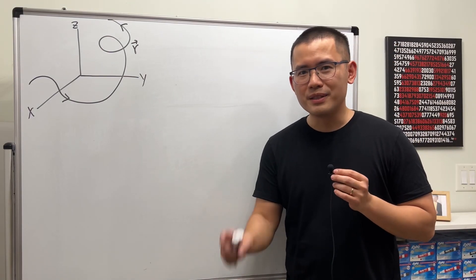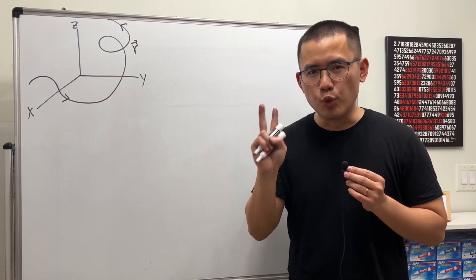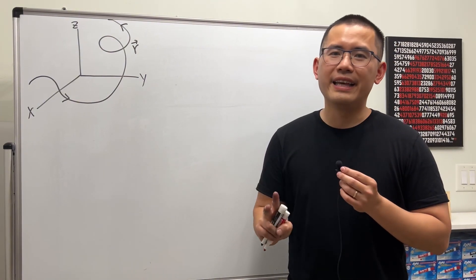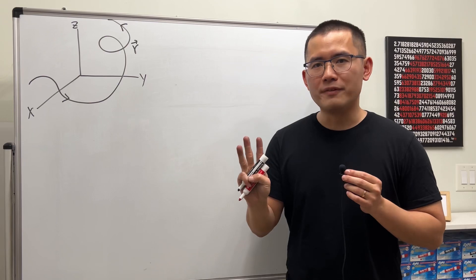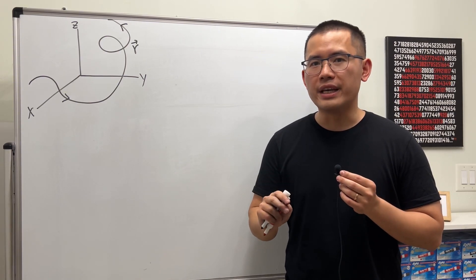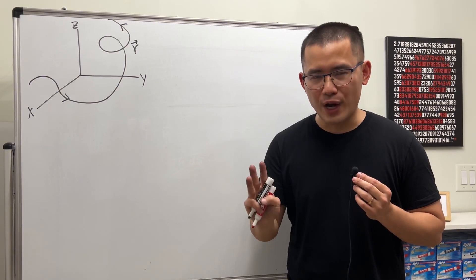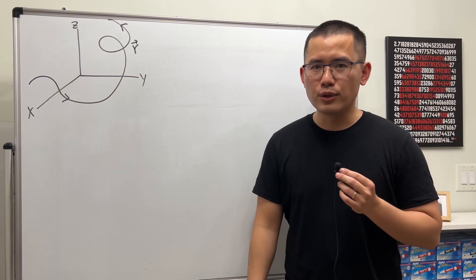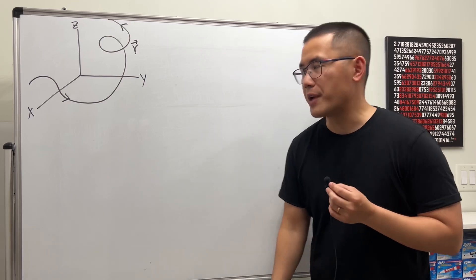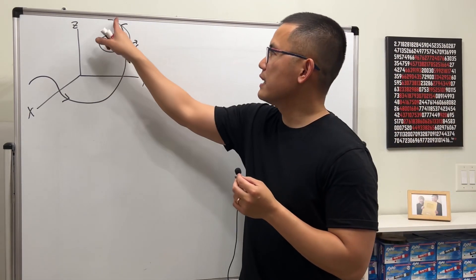Today we'll be talking about the unit tangent vector, the unit normal vector, and the binormal vector. All three together give us the TNB frame, which is also called the Frenet frame.